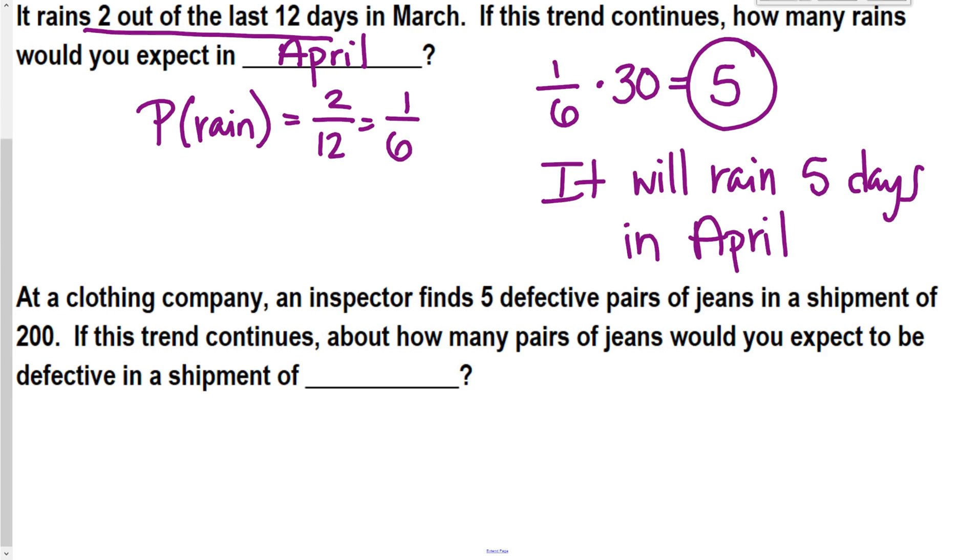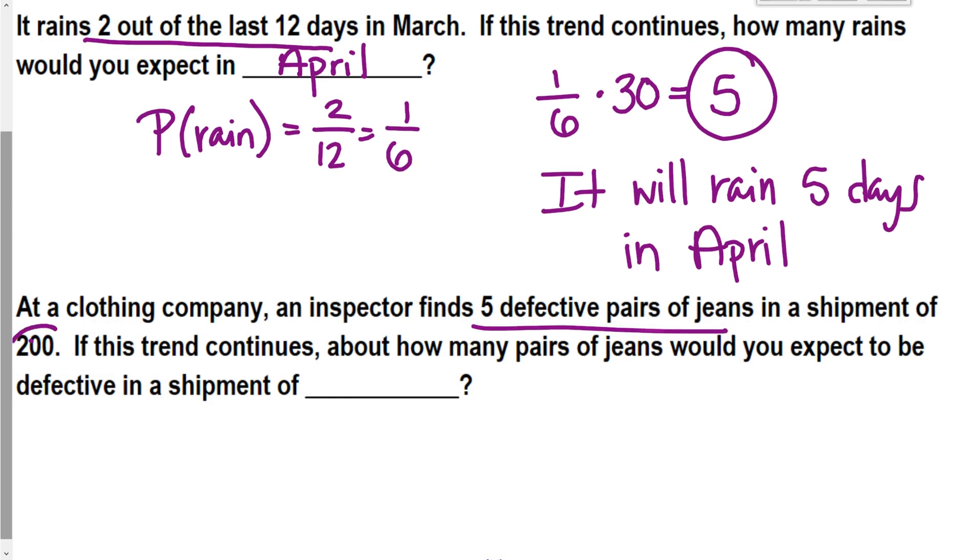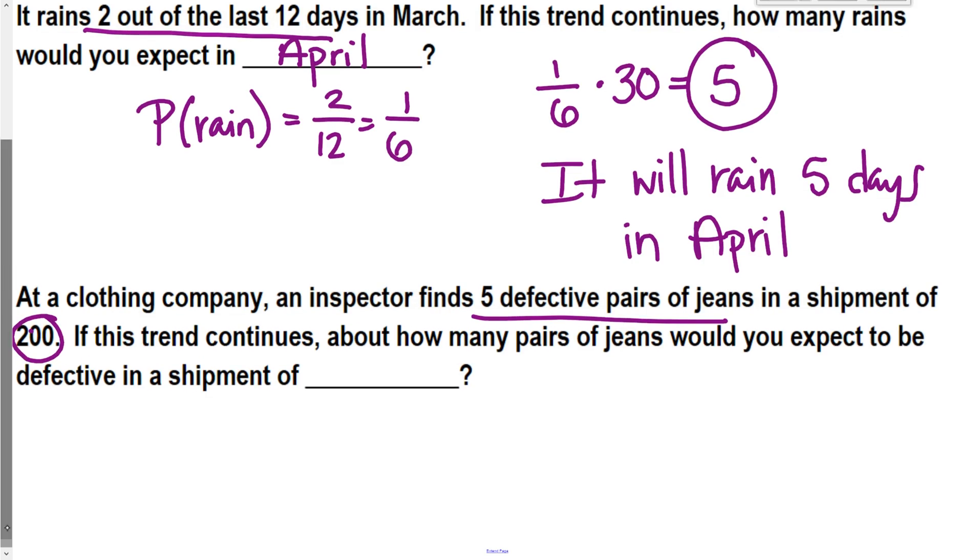A clothing store company, at a clothing store company, an inspector finds 5 defective pairs of jeans in a shipment of 200. So again, if this trend continues, about how many pairs of jeans would you expect to be defective in a shipment of 5,000?